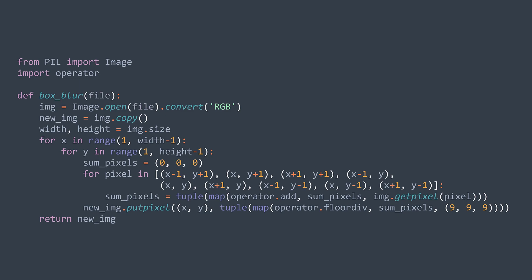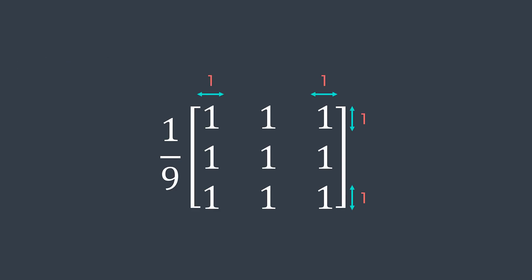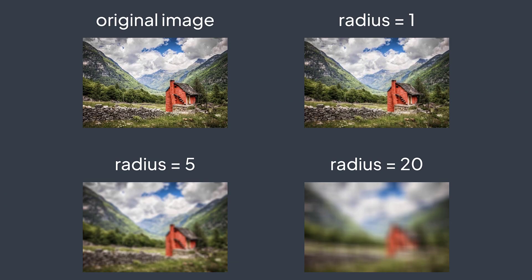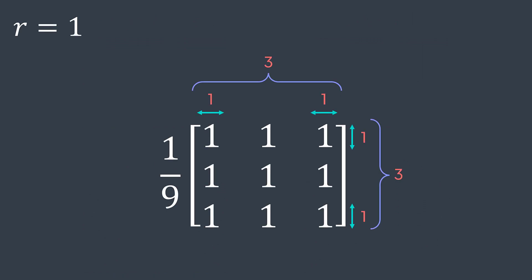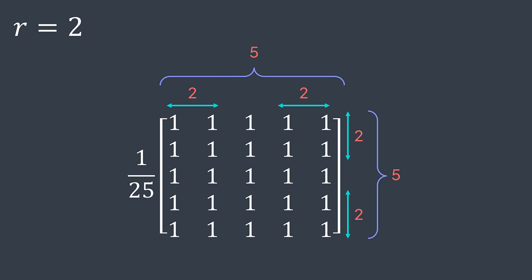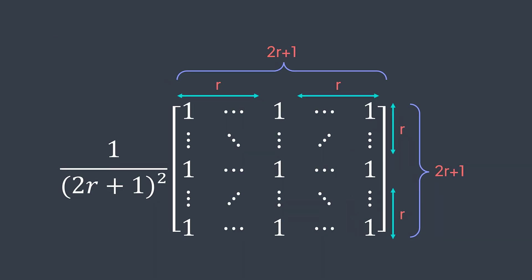In reality, what we did is a box blur radius 1, but we can create a more powerful blur by increasing the radius. Here's our original image, after blurring with a radius of 1, after blurring with a radius of 5, and after blurring with a radius of 20. To increase the blur, we just increase the kernel size. With radius 1, we had a kernel of size 3, because we worked with neighbors up to one level around the actual pixel, and we divided by 9 — the area of the kernel. With a radius of 2, we get a kernel of size 5, because we work with neighbors up to two levels around, and we divide by 25.